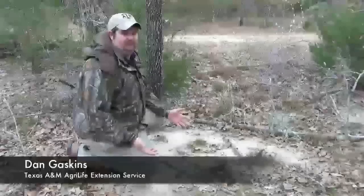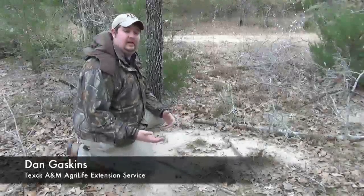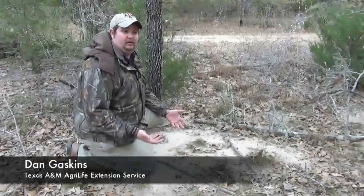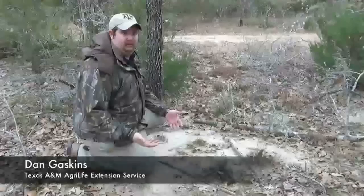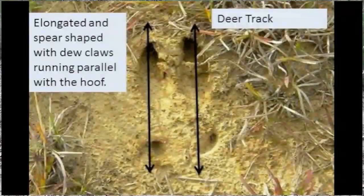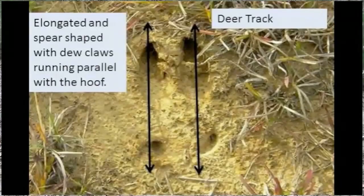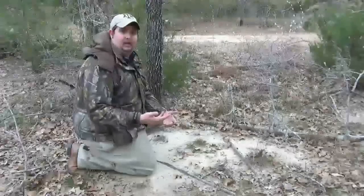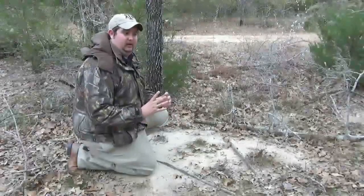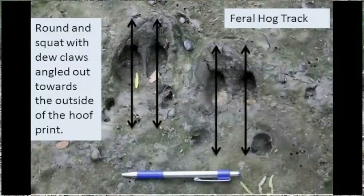One thing people sometimes have problems with is telling the difference between feral hog track and the track of whitetail deer or another deer species. Here we have a whitetail deer track and there are a few ways you can tell the difference. One is whitetail deer and other deer, their tracks are usually going to be more elongated and a little bit more spear shaped, whereas the feral hogs are going to be a little more round, a little more squat.